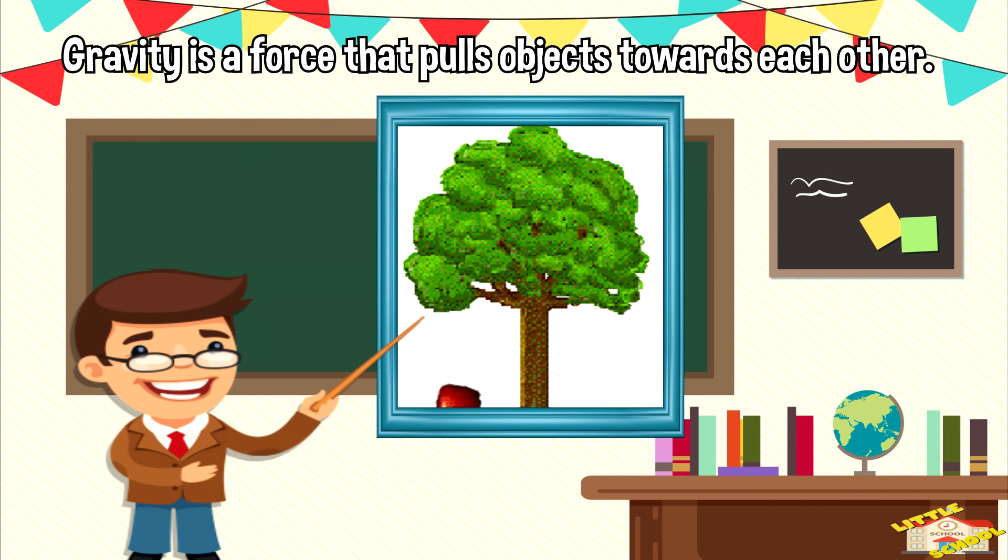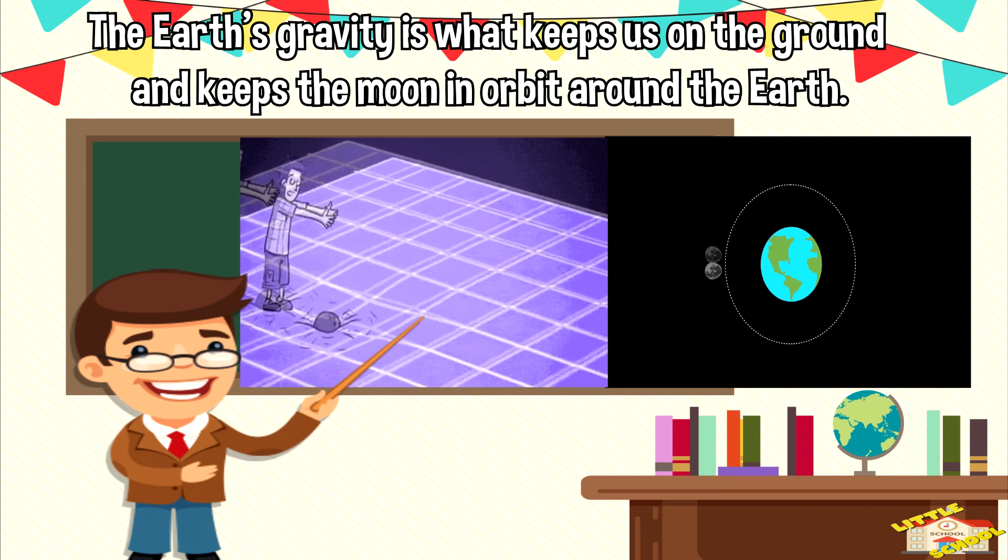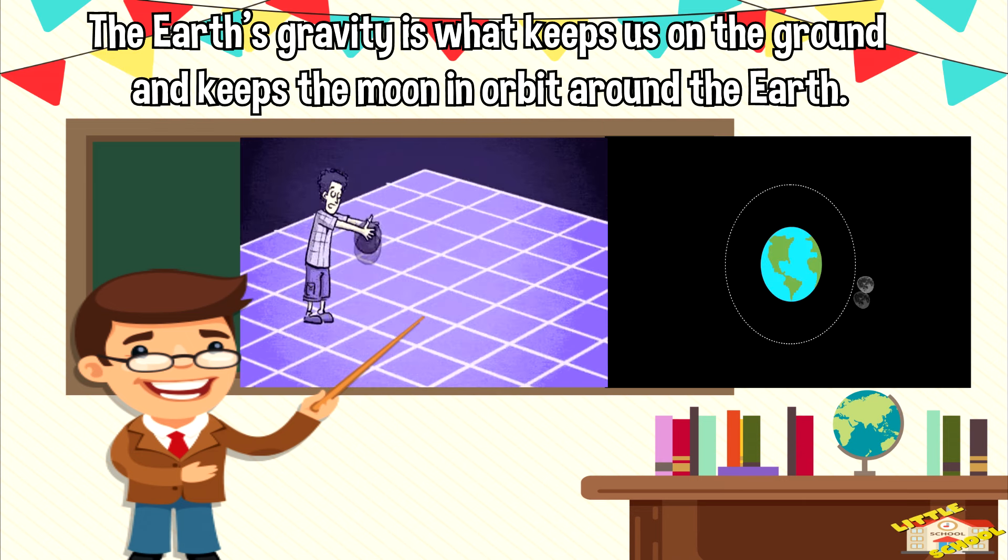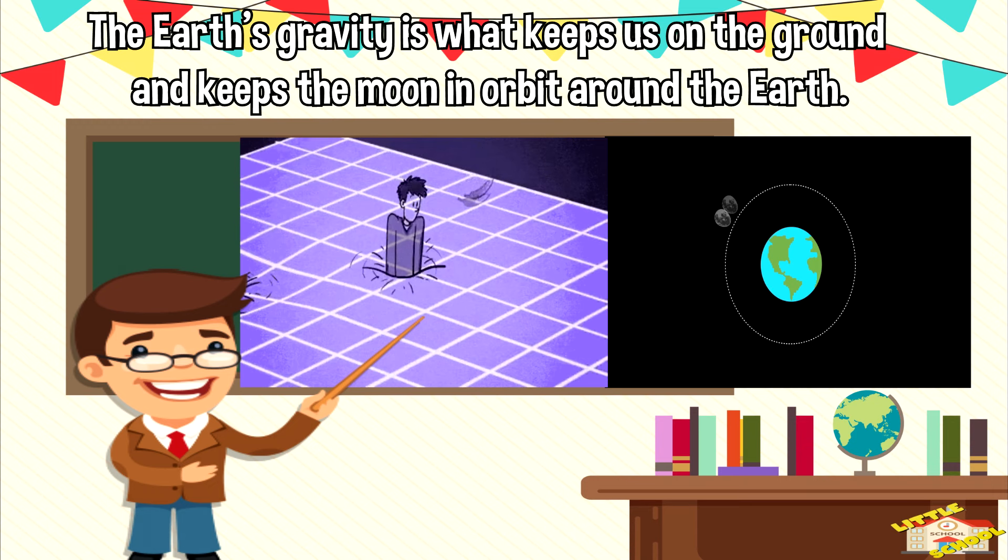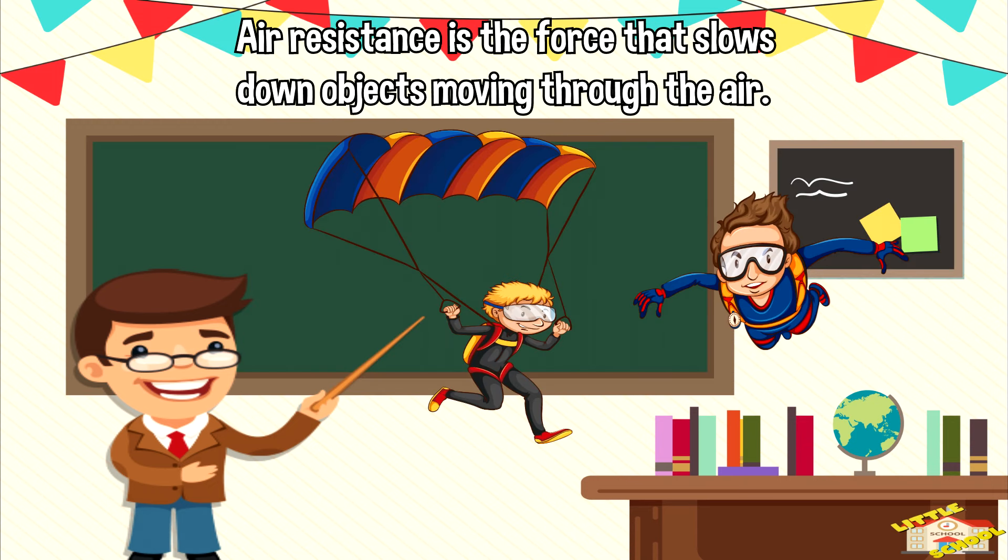Gravity is a force that pulls objects towards each other. The earth's gravity is what keeps us on the ground and keeps the moon in orbit around the earth. Air resistance is the force that slows down objects moving through the air, such as a parachute or a skydiver.